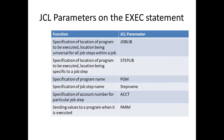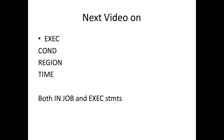These are the parameters we have discussed so far: JOBLIB, STEPLIB, PGM, step name, accounting information parameter, and PARM parameter. In the next video, we are going to look into the condition statement, REGION, and TIME — parameters that can be used in both the JOB and EXEC statements. Those who have not subscribed, kindly subscribe. Please give a thumbs up and share if you like it. Thanks for watching. Let's meet in the next video.